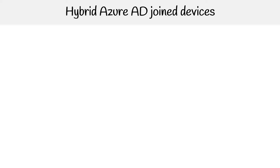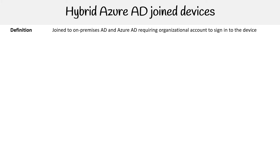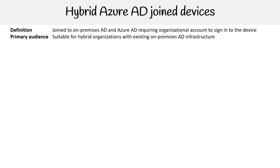We're on to the last join type for device management. This one's called Hybrid Azure AD Joined Devices. This is allowing you to join to an on-premise AD or Azure AD, requiring an organizational account to sign into the device. The emphasis there is on-premise. It's suitable for hybrid organizations with existing on-premise AD infrastructure, it's applicable to all users within an organization, and the device is going to be owned by the company.